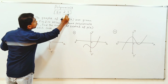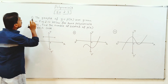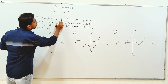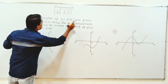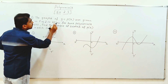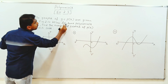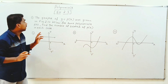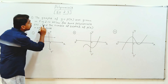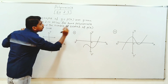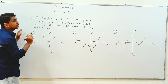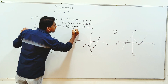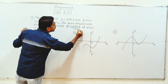Polynomials lesson, exercise 2.1. First question: the graphs of y equal to p of x are given in figure 2.10 below for some polynomials p of x. Find the number of zeros of p of x. If zeros are simple, we will be able to solve the solution.